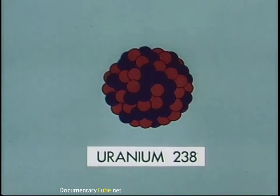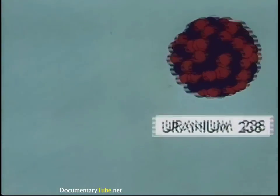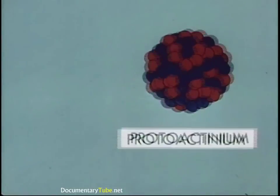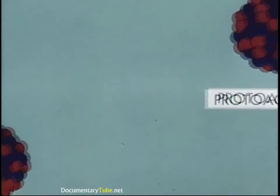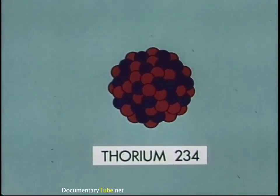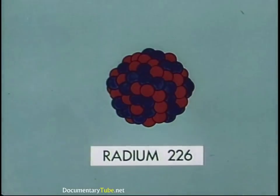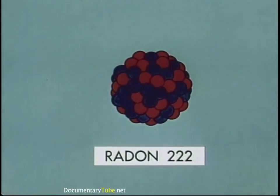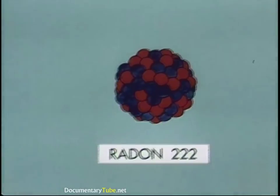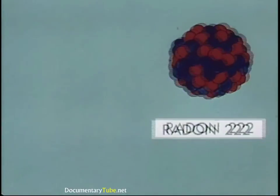Half-life varies from isotope to isotope. It takes 4,500,000,000 years for half a hunk of uranium-238 to become thorium-234. The half-life of radium-226 is 1,600 years; that of radon is slightly less than four days, while others have half-lives of fractions of a second.